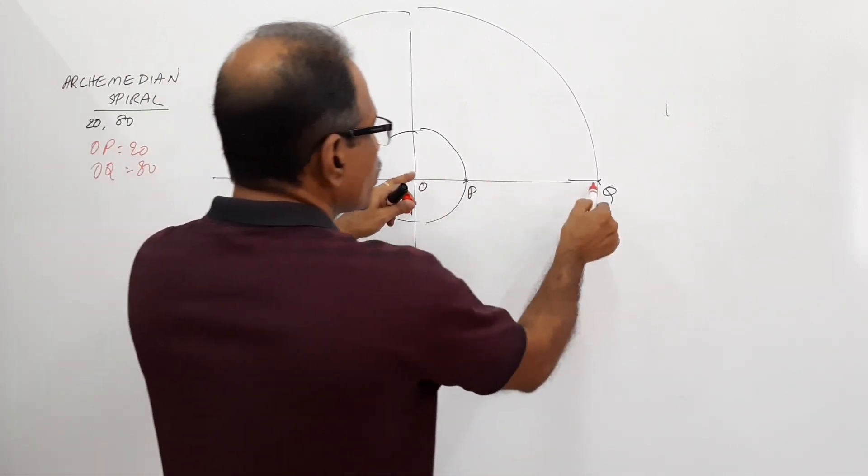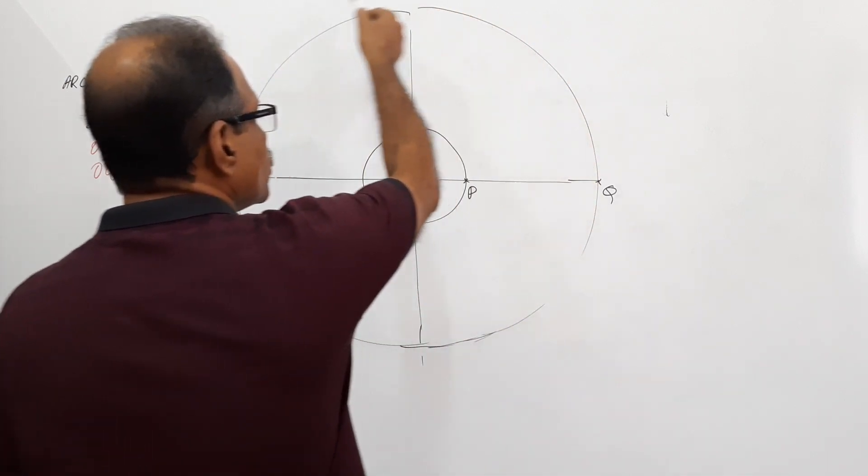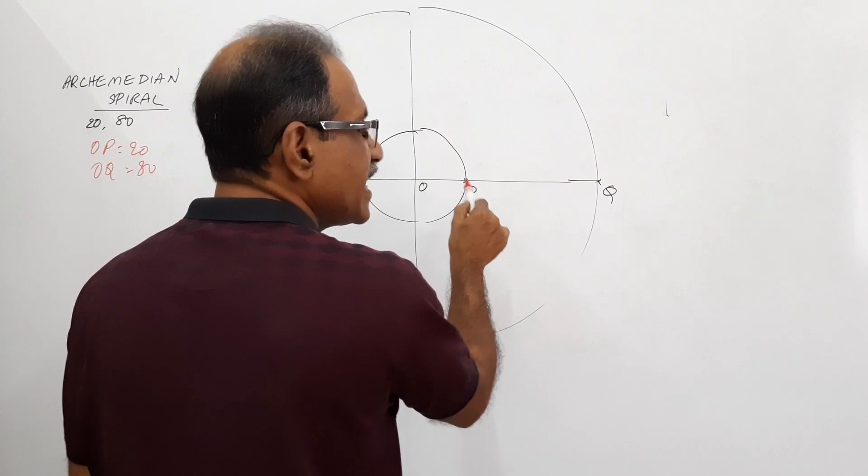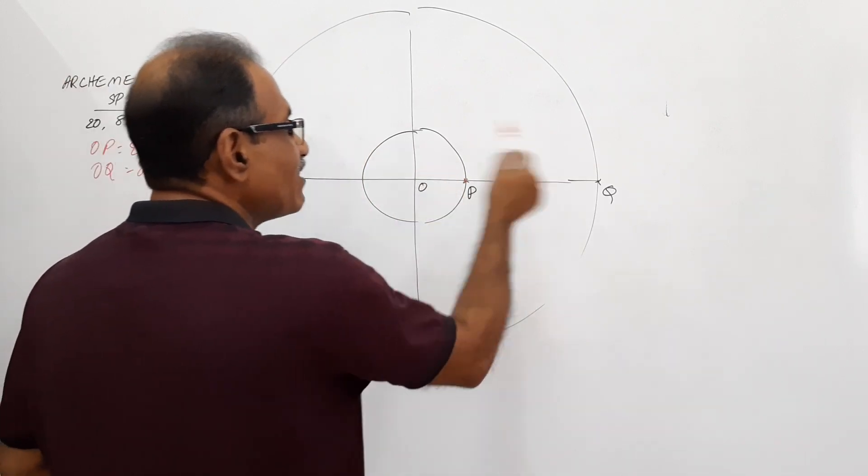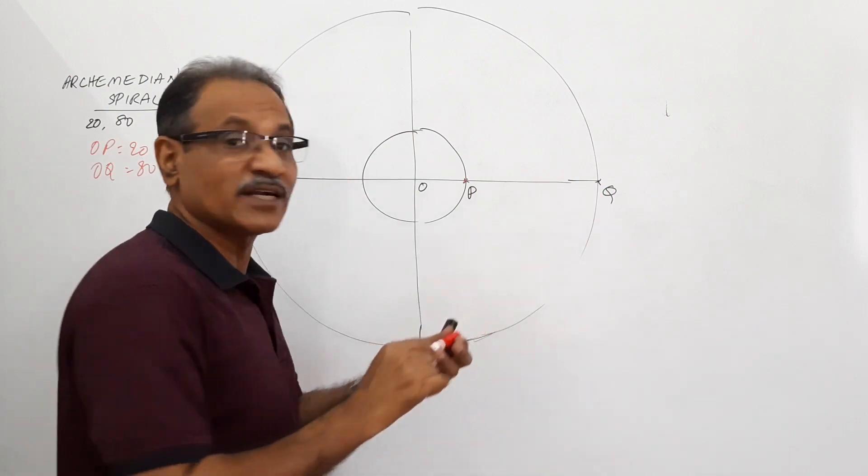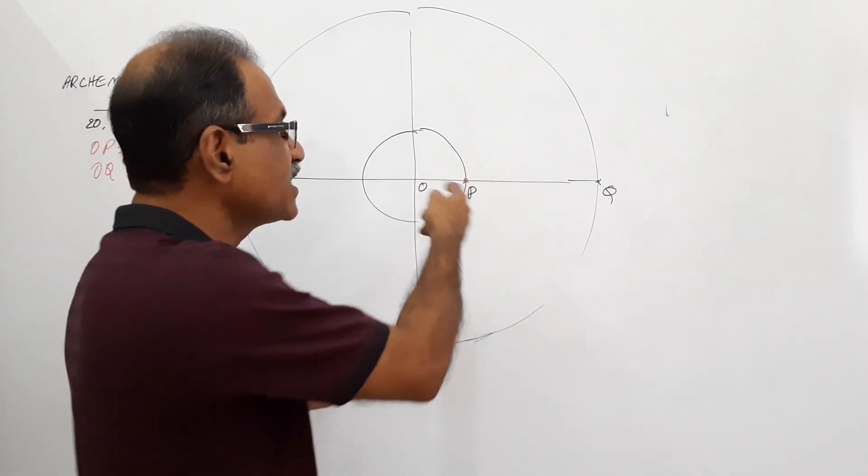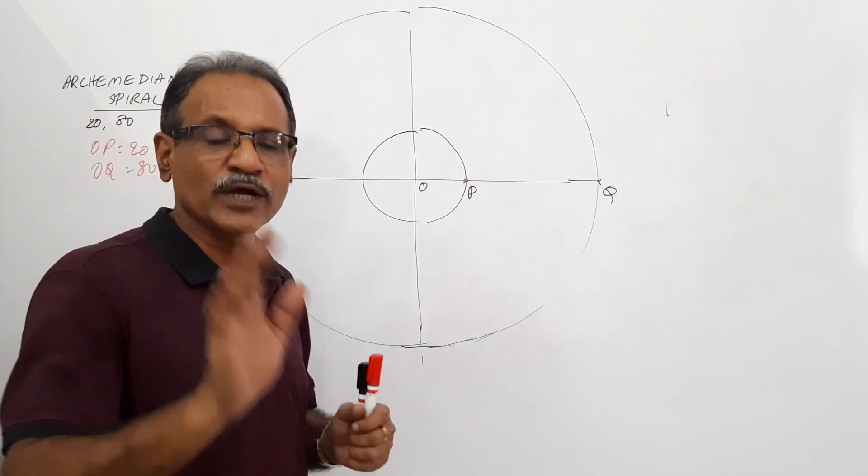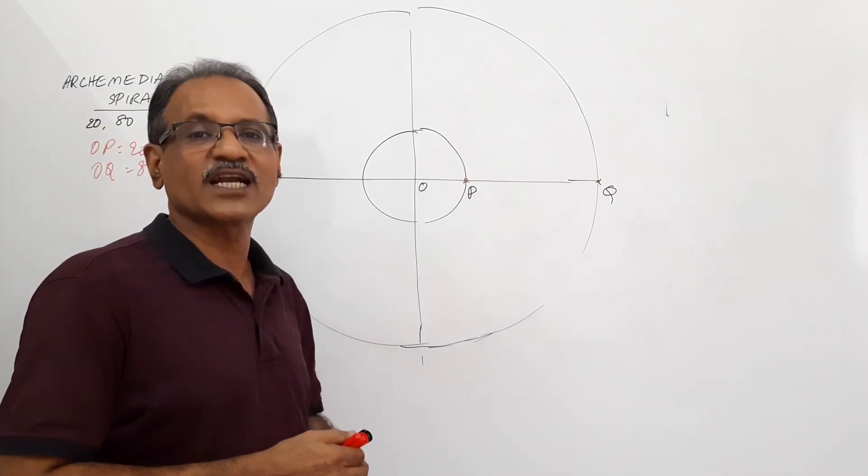This is a link. OQ is a link which rotates slowly like this with a uniform velocity. A point which is initially at P travels and reaches Q when it rotates once. Draw one convolution, that's the question. Draw one convolution means this translation takes place in one rotation of the link.